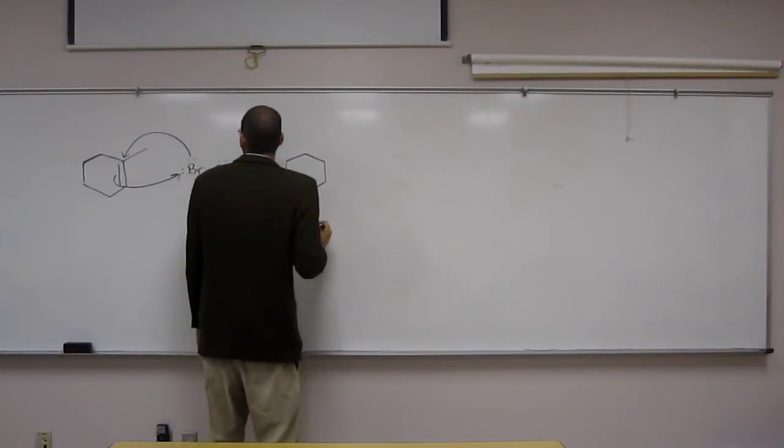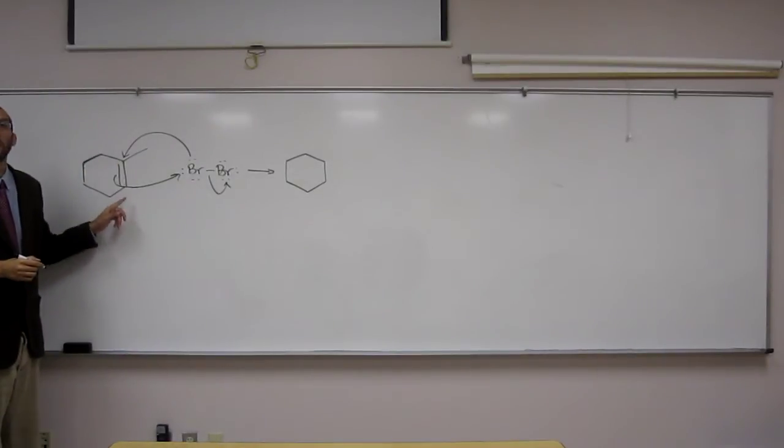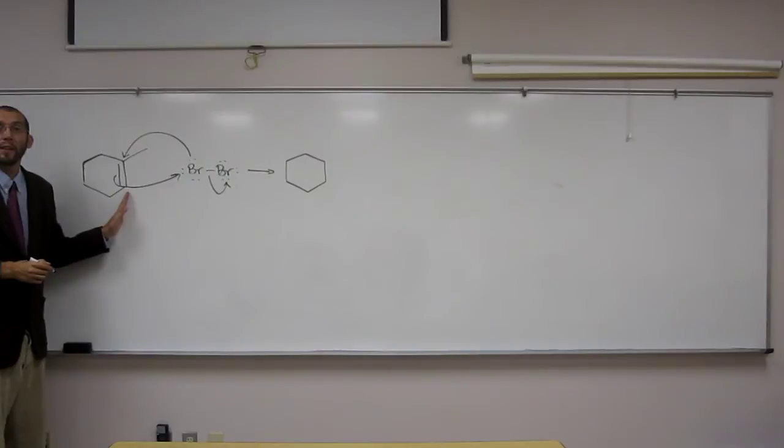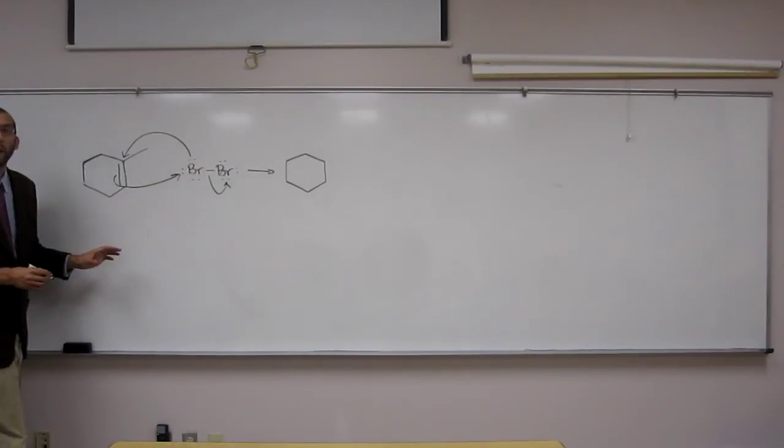So let's draw the intermediate that we get. What's the hybridization of these two carbons? SP2, right? So if they're SP2, what is the geometry around them? They're planar, right? So that means that this bromine can attach where and where? Front side and back side. Yeah, from the front face or the back face.